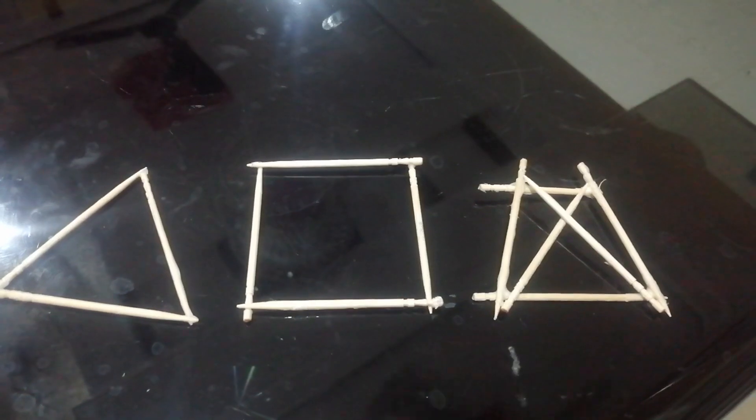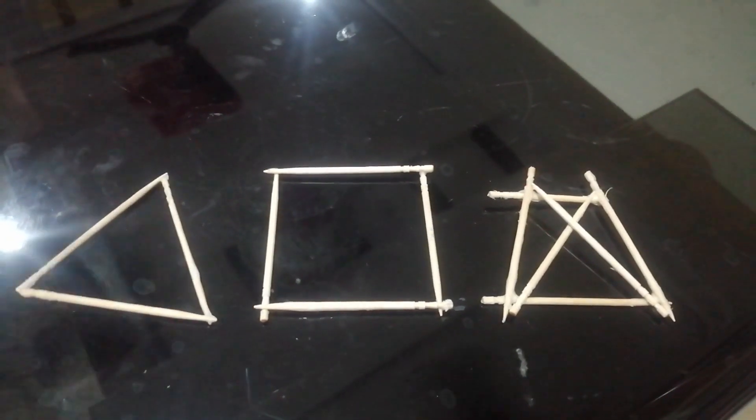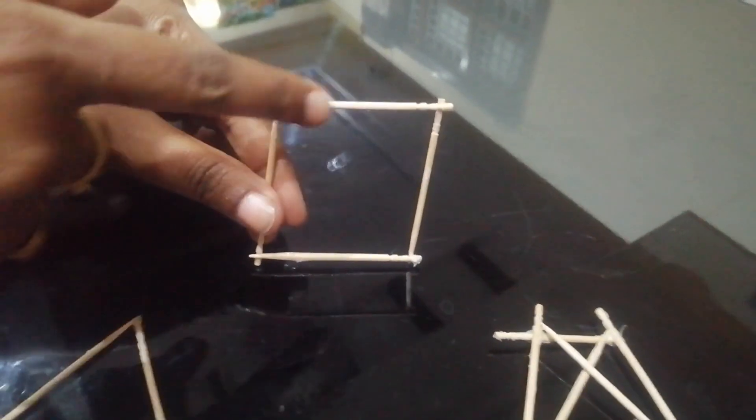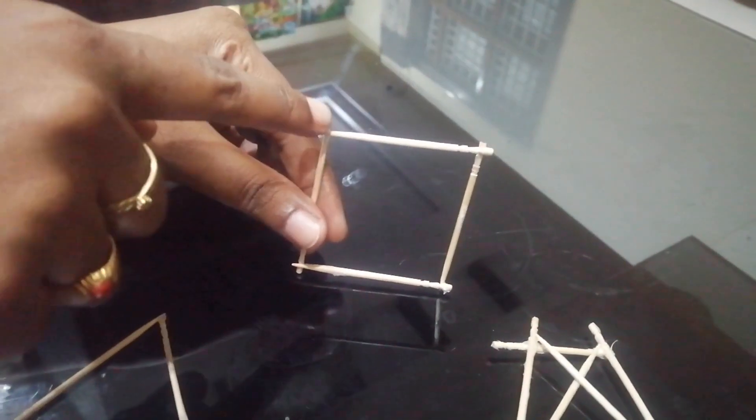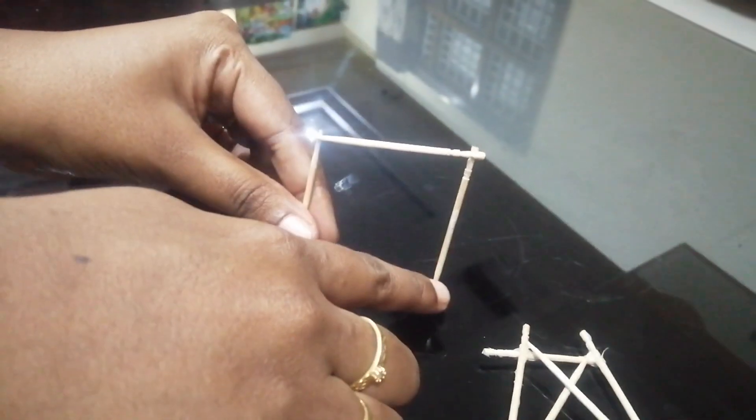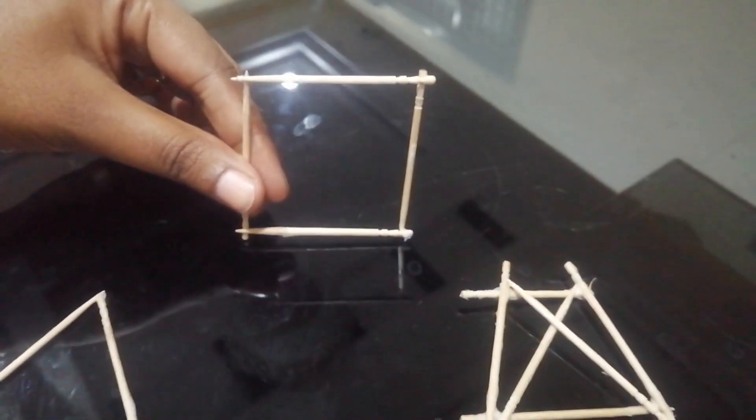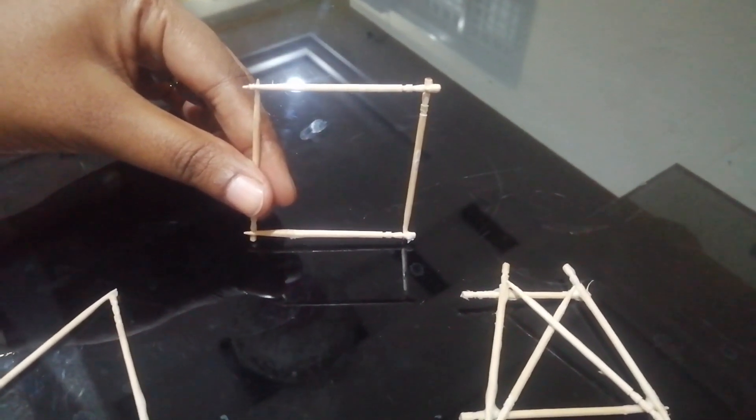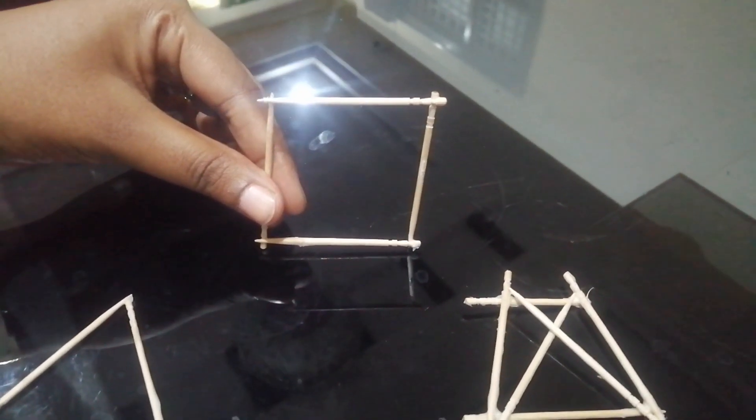Here, we have a frame and let us check whether it is perfect or imperfect. Look at this frame. In this frame, we have 1, 2, 3, 4, so 4 members and 1, 2, 3, 4, 4 joints and the condition M equals 2J minus 3 is not satisfied and it is M is less than 2J minus 3. So, this can be called as a deficient imperfect frame.